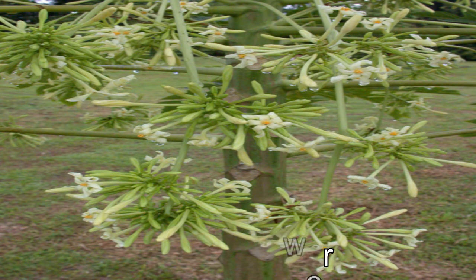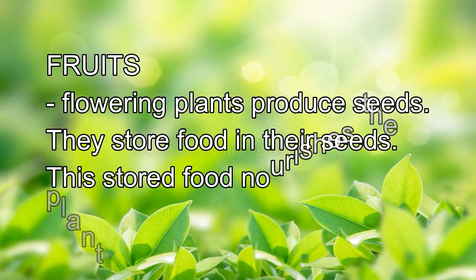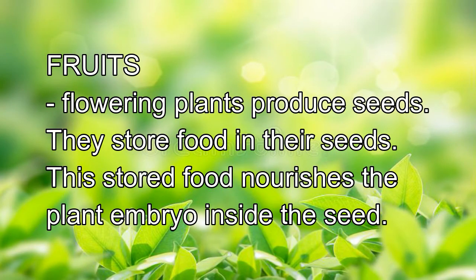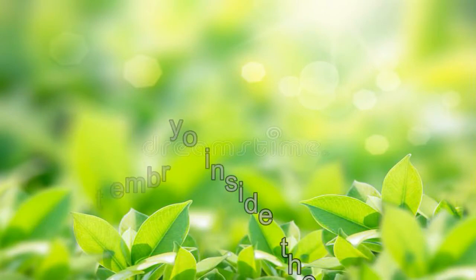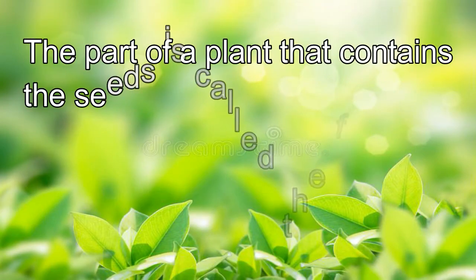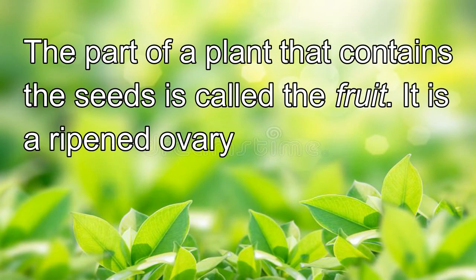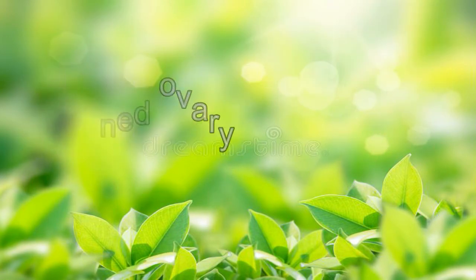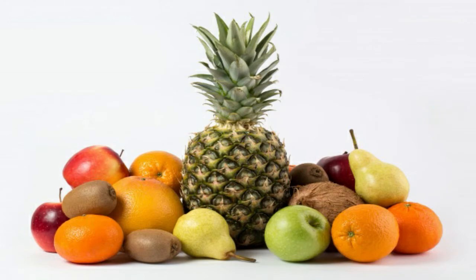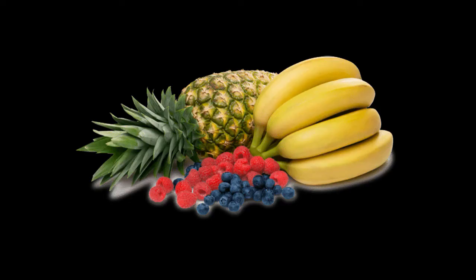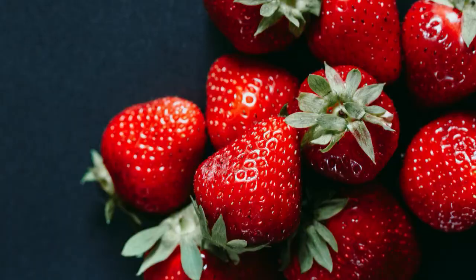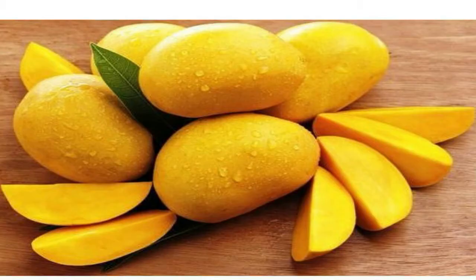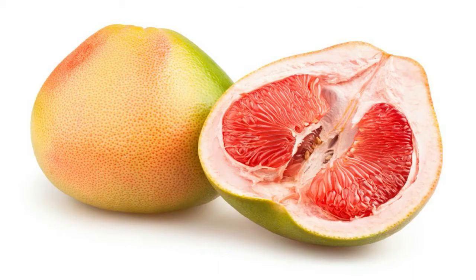Flowering plants produce seeds and store food in them. These stored foods nourish the plant embryo inside the seed. The part of the plant that contains the seeds is called the fruit — it is the ripened ovary of a flower. Fruits are either fleshy or dry, and they vary in size, shape, and color. Oranges, mangoes, chicos, and pomelos are some examples of fruits.